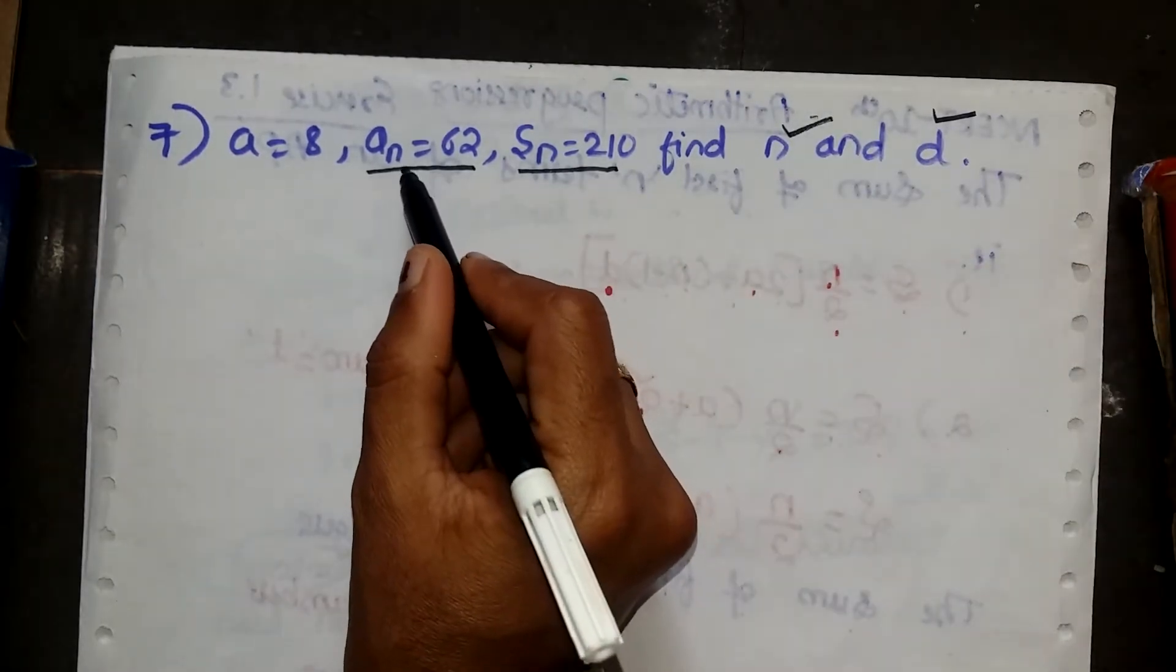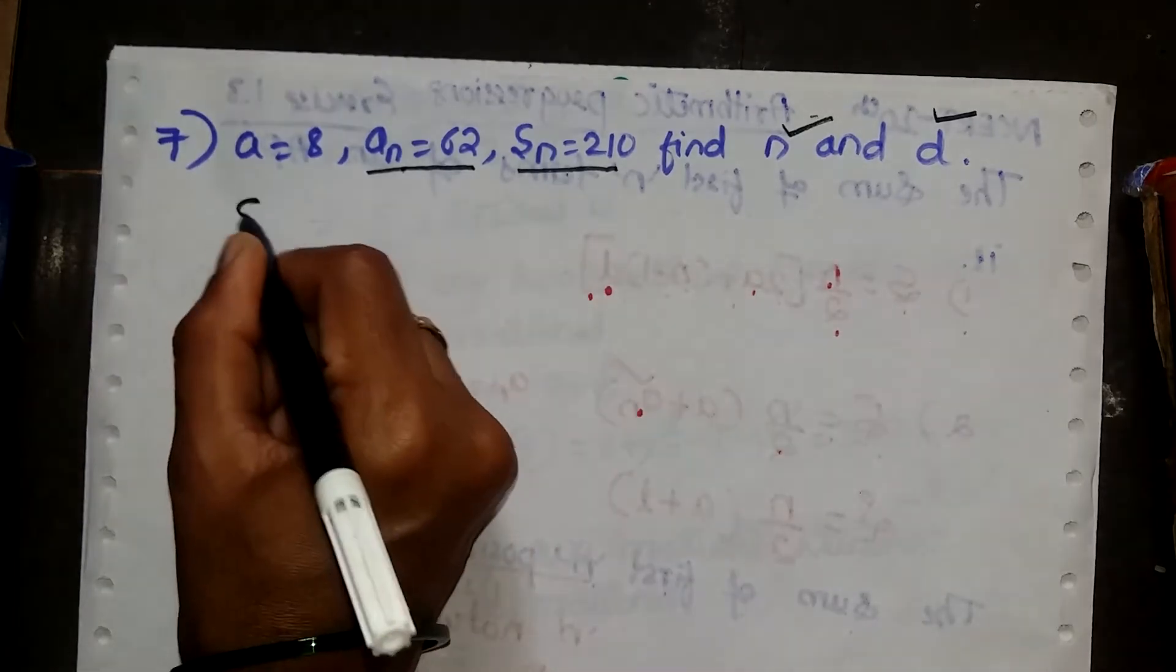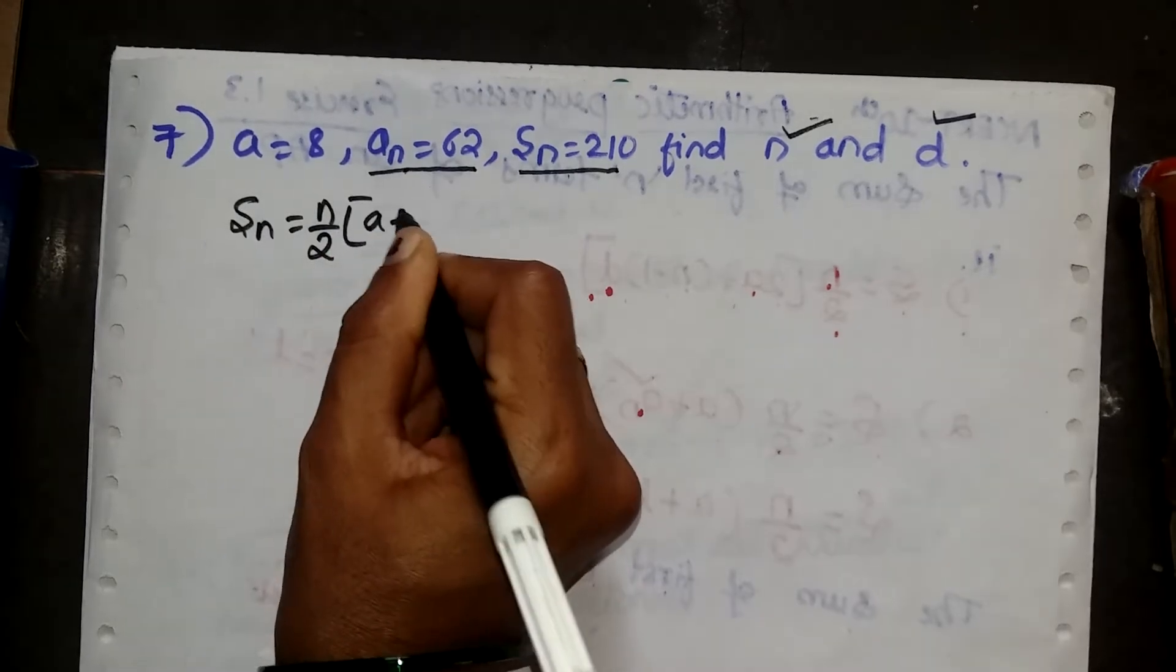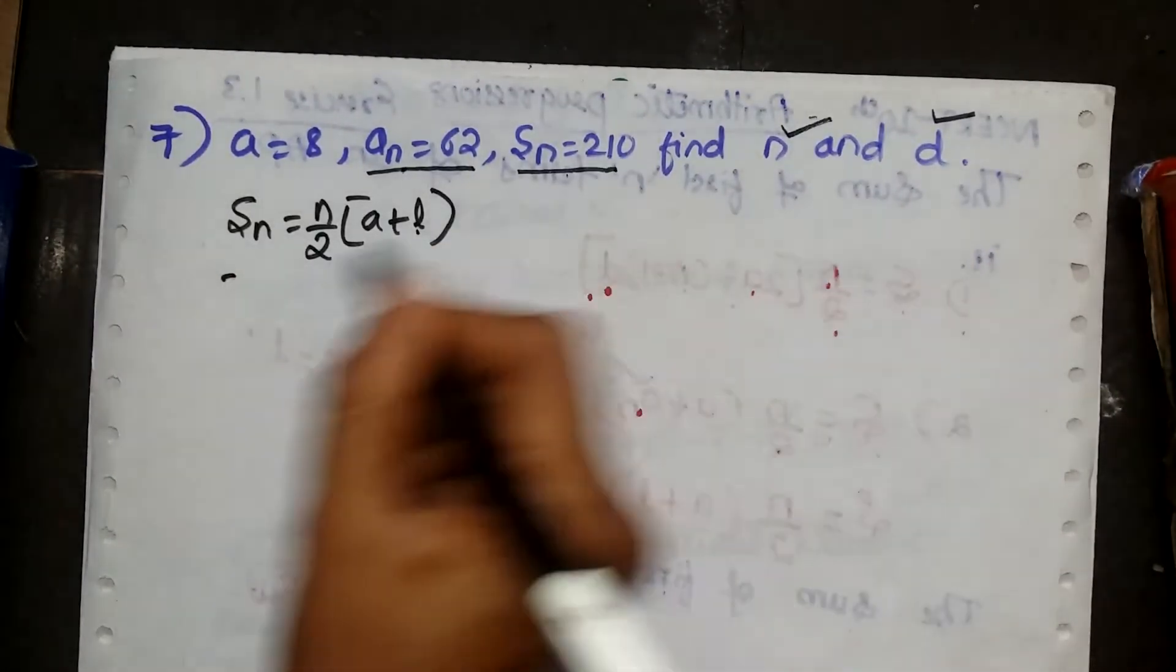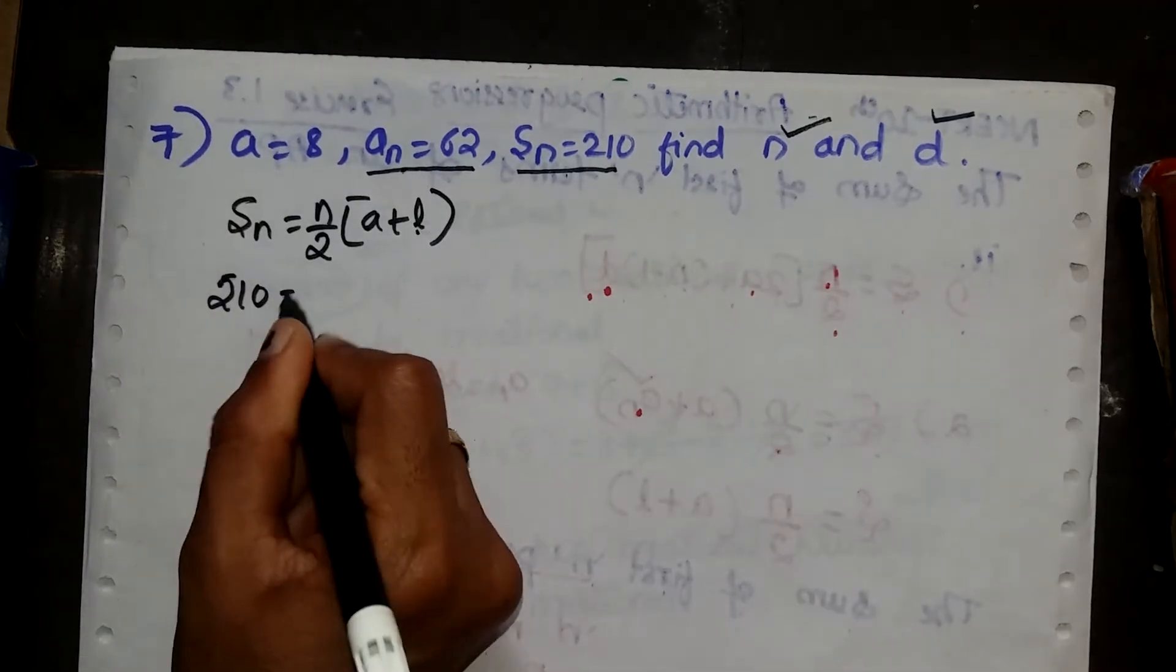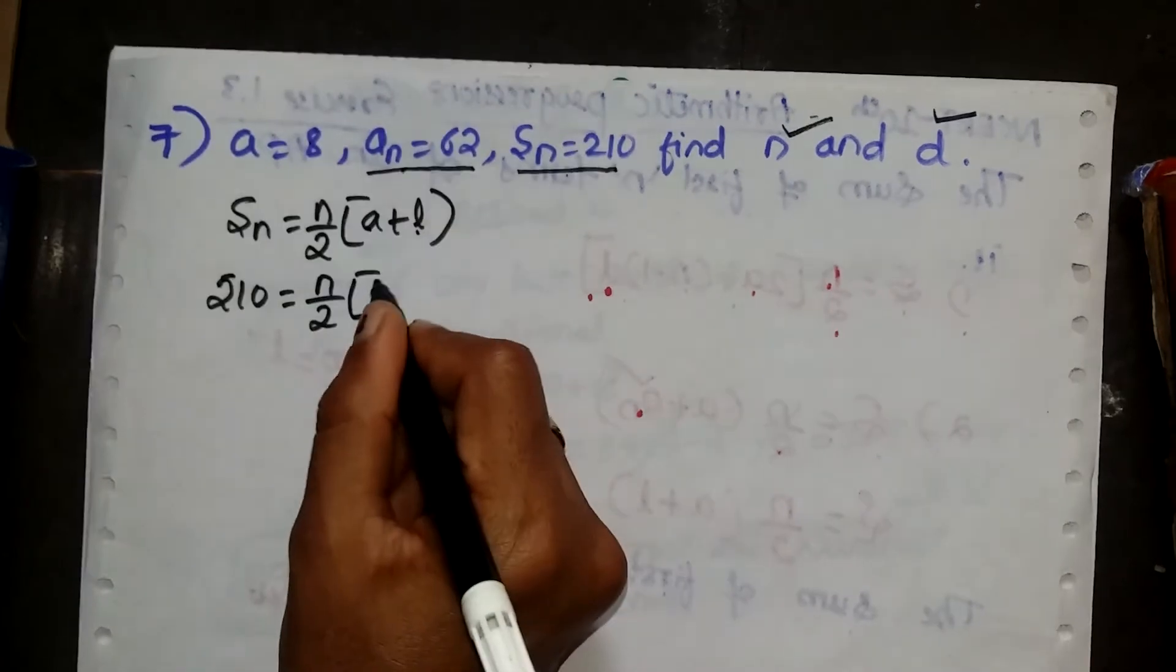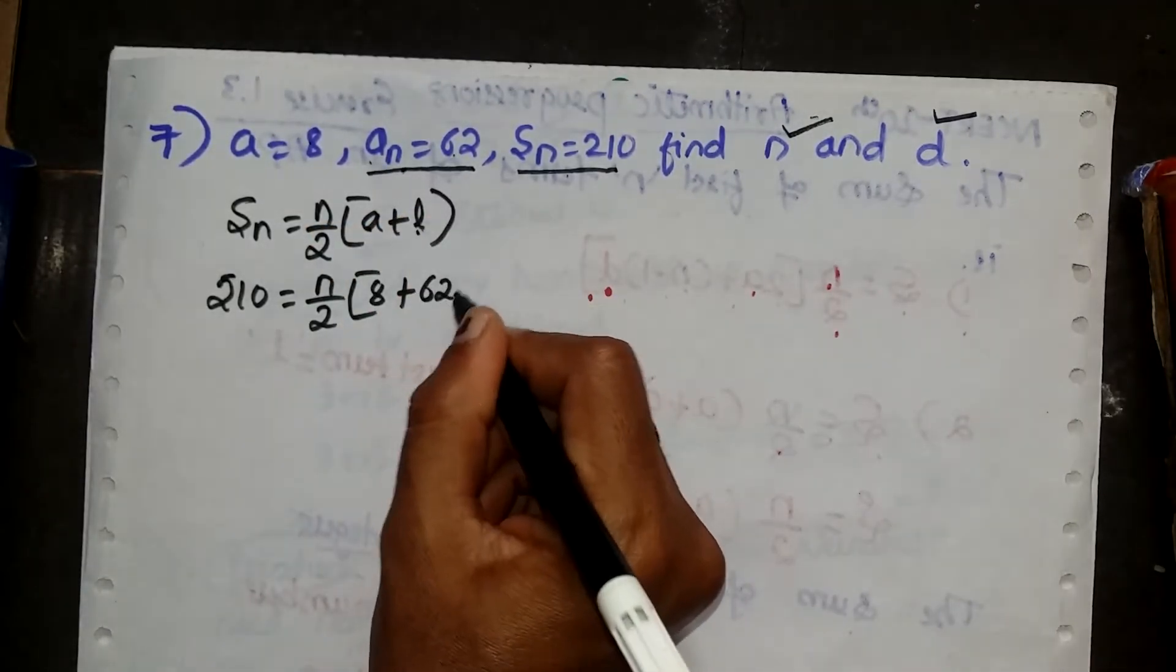So here last term is given. I take the formula: Sn equals n by 2 into bracket of a plus last term. So here Sn is 210 equals to n divided by 2, a is 8 plus last term an equals to 62.